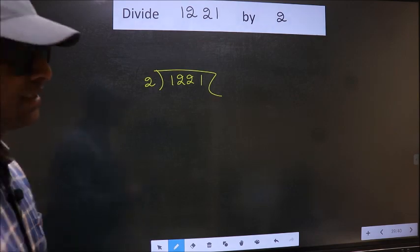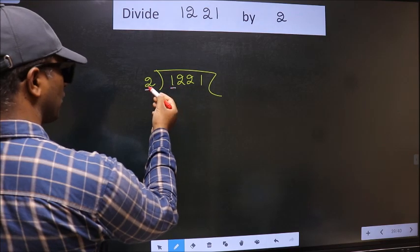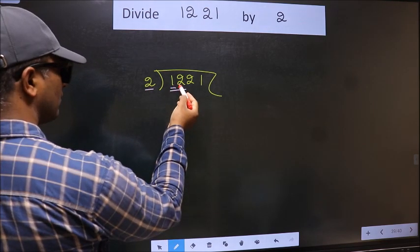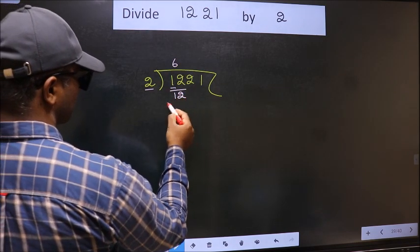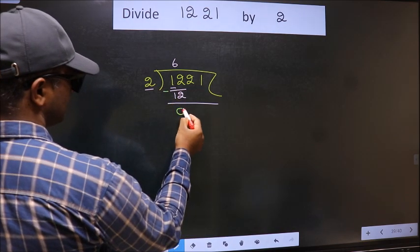Next. Here we have 1 and here 2. 1 is smaller than 2. So, we should take 2 numbers: 12. When do we get 12 in 2 table? 2 times 6 is 12. Now, we should subtract. We get 0.